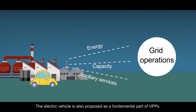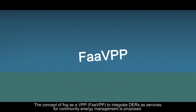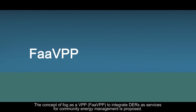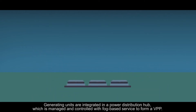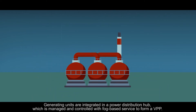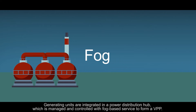The electric vehicle is also proposed as a fundamental part of virtual power plants. The concept of FOG as a virtual power plant to integrate distributed energy resources as services for community energy management is proposed. Generating units are integrated in a power distribution hub, which is managed and controlled with FOG-based service to form a virtual power plant.